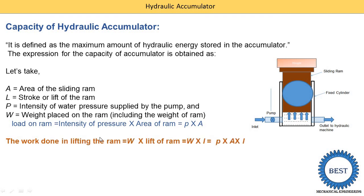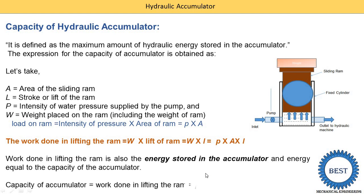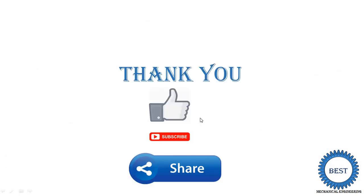The load on the ram equals the intensity of pressure P multiplied by the area of the ram, which is π/4 × D². The work done in lifting the ram equals W × L, and since W equals P × A, the work done equals P × A × L. The work done in lifting the ram is also the energy stored in the accumulator. Therefore, the capacity of the accumulator equals P × A × L, where A × L is the volume.